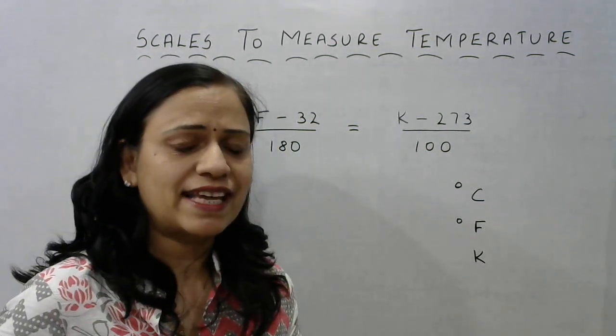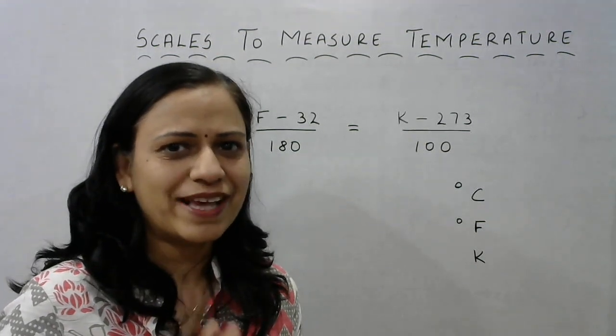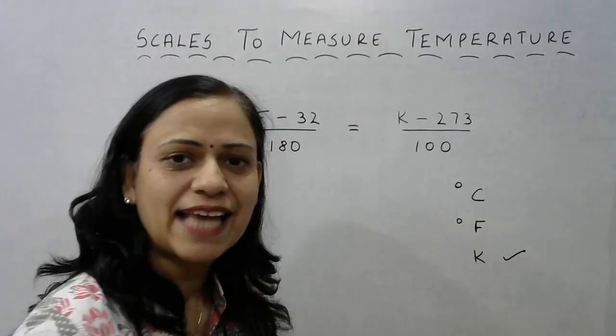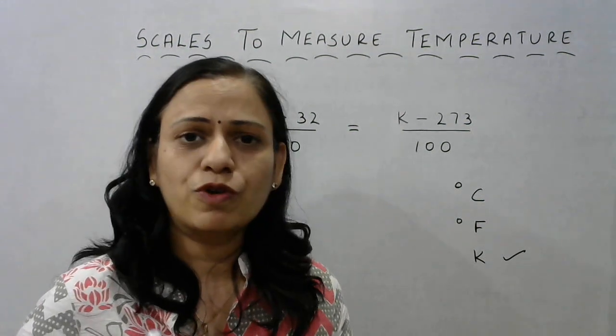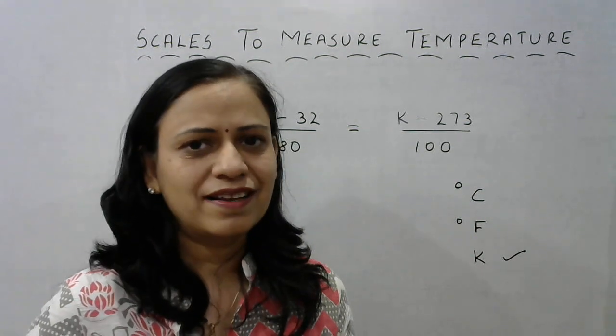So out of these three scales, which is the SI unit of temperature? Can you guess? Yes, it is the Kelvin scale. So the SI unit of temperature is Kelvin, although we most commonly use degree Celsius as the scale for measuring temperature.